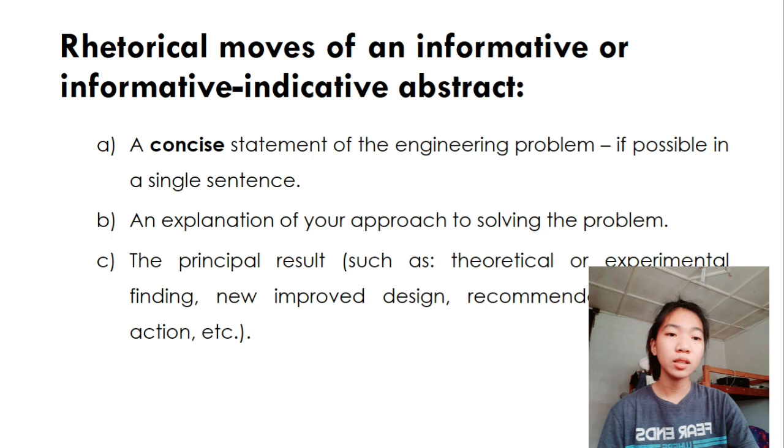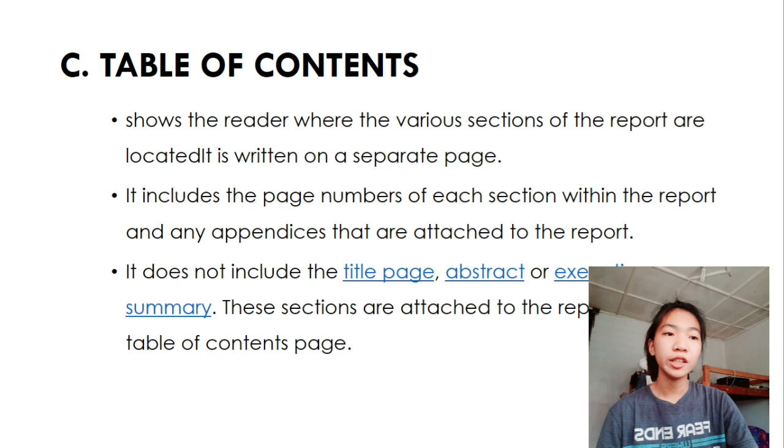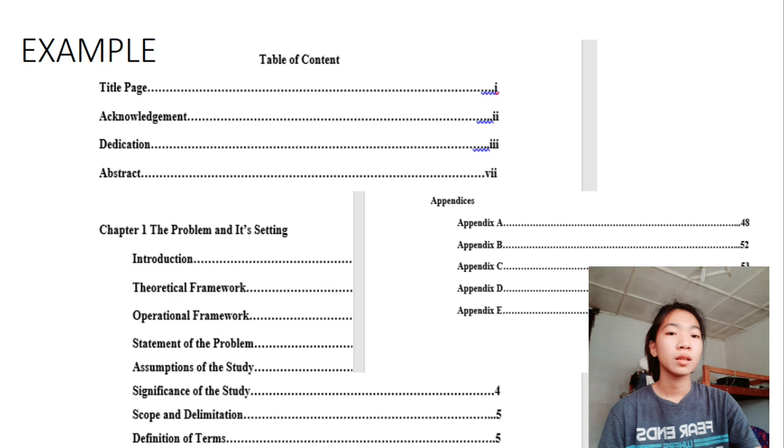And for the table of contents, it shows the reader where the various sections of the report are located. It is written on a separate page. It includes the page numbers of each section with the report and any appendices that are attached to the report. It does not include the title page, abstract, or executive summary. These sections are attached to the report before the table of contents page.